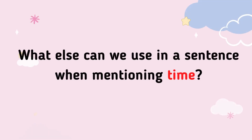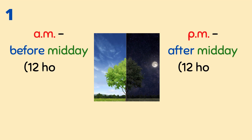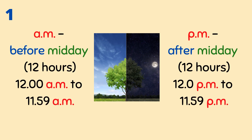What else can we use in a sentence when mentioning time? We can use AM or PM. These are abbreviations from Latin words — AM stands for 'ante meridiem' and PM for 'post meridiem.'